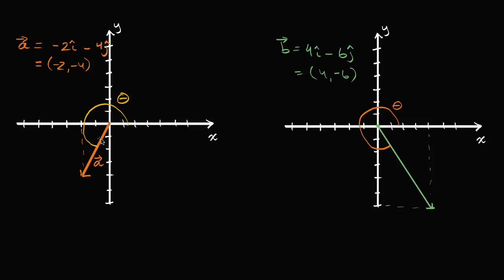Let's get some more practice finding the angle — the positive angle between the positive x-axis and a vector drawn in standard form, where its initial point, or its tail, is sitting at the origin. Here for vector A, we can write it in two different ways. In engineering notation, it would be negative two times the unit vector i, minus four times the unit vector in the y direction. Or we could say its x component is negative two, its y component is negative four. Starting at the origin, we go two to the left and four down to get to the terminal point, or the head of the vector.